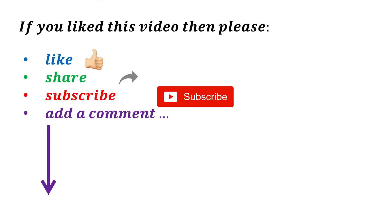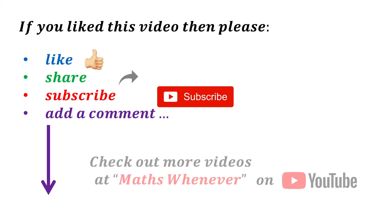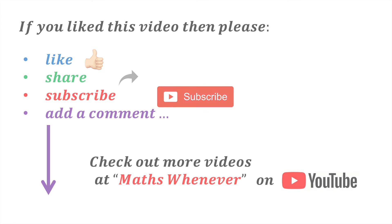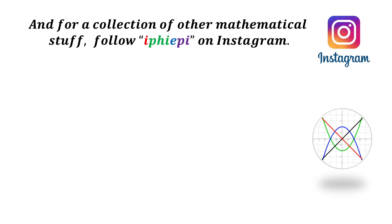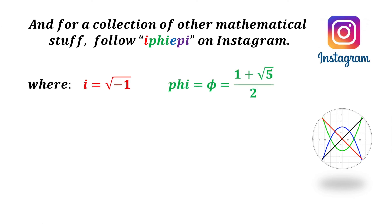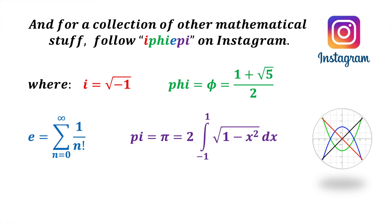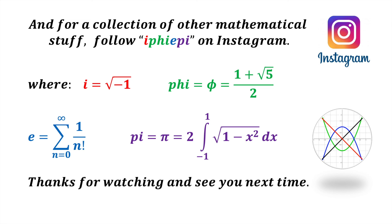If you liked this video, then please like, share, subscribe and add a comment. You can also check out more videos at MathsWhenever on YouTube. And for a collection of other mathematical stuff, follow iphiepi on Instagram, where i is the imaginary unit, phi is the golden ratio, e is the exponential function, and pi is the ratio of a circle's circumference to its diameter. Thanks for watching, and see you next time.